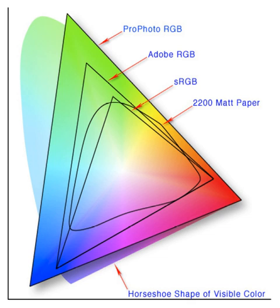A color space may be arbitrary, with particular colors assigned to a set of physical color swatches and corresponding assigned color names or numbers, such as with the Pantone collection, or structured mathematically, as with the NCS system, Adobe RGB and sRGB.